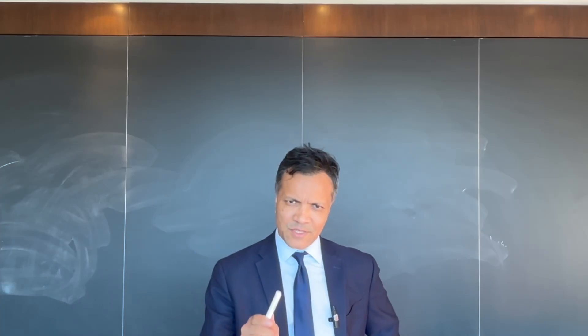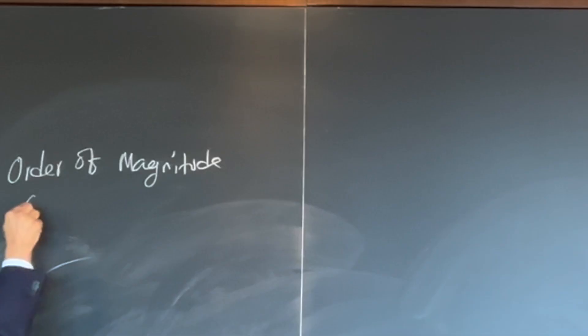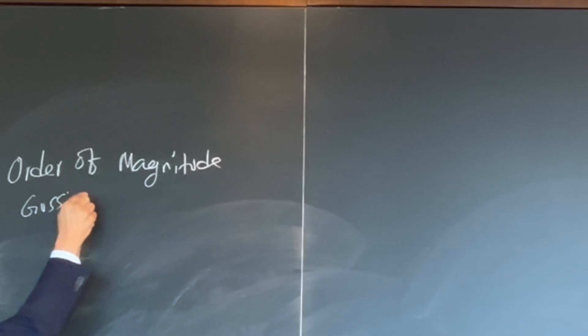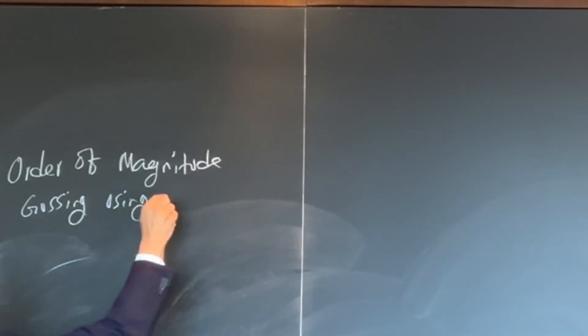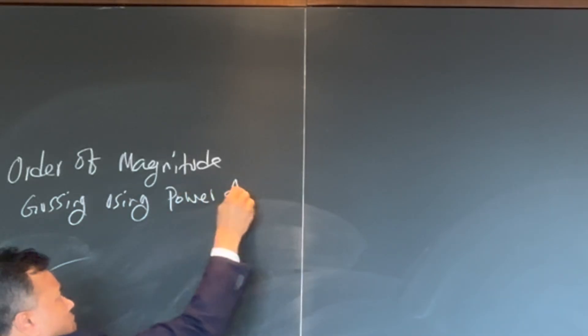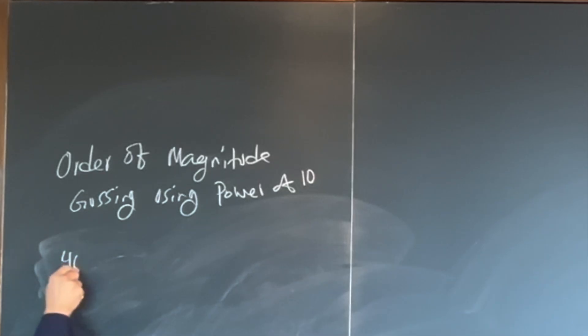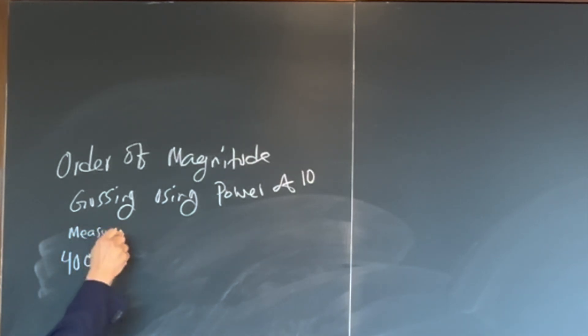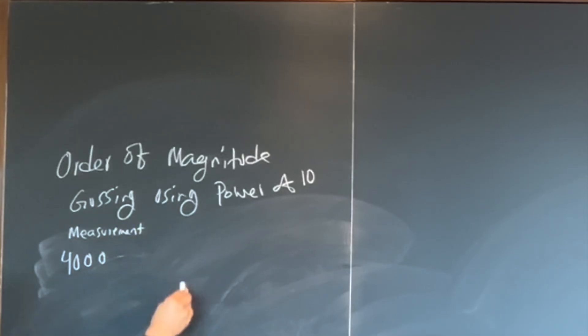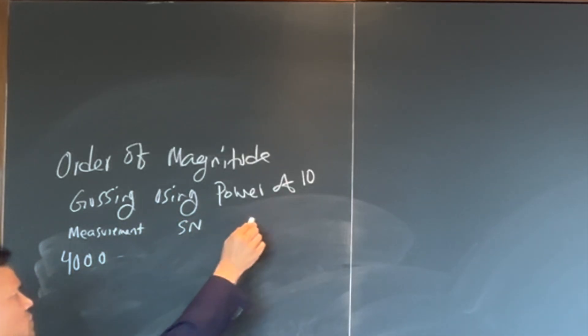The topic is order of magnitude, which is guessing using powers of 10. Last time we did sig figs. Sig fig is as precise as you can be — you keep collecting numbers until you get the last reliable number in a lab measurement. But order of magnitude is just guessing using powers of 10. So this is measurement, this is scientific notation, and this is order of magnitude.